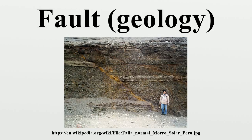Flat segments of thrust fault planes are known as flats, and inclined sections are known as ramps. Typically, thrust faults move within formations by forming flats and climb up section with ramps. Fault-bend folds are formed by movement of the hanging wall over a non-planar fault surface and are found associated with both extensional and thrust faults.